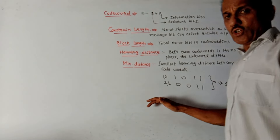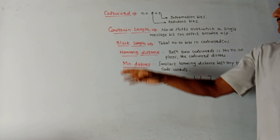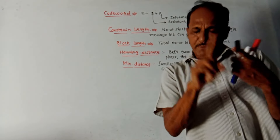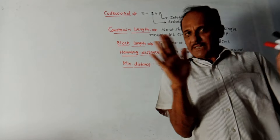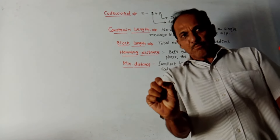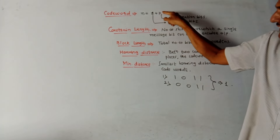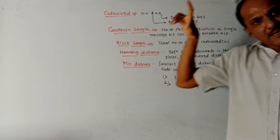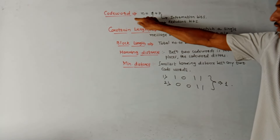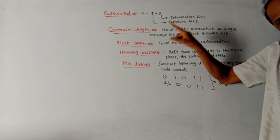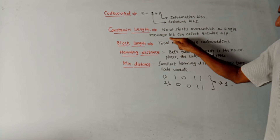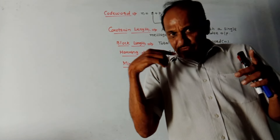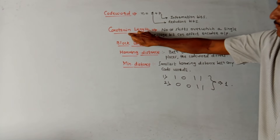Now let us discuss some terminologies related to network coding. A codeword contains actual information bits plus certain extra redundant bits. The number of bits in a codeword is n = r + k, where r represents redundant bits and k represents the information bits containing the actual data to be transmitted. Constraint length is the number of shifts over which a single message bit can affect the encoder output. Block length is also represented by n, which includes redundant bits and information bits.